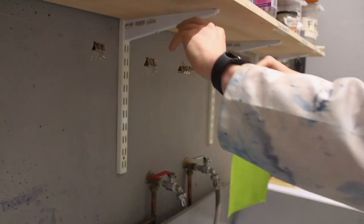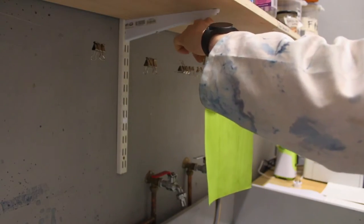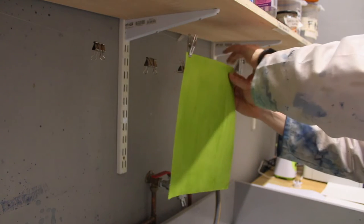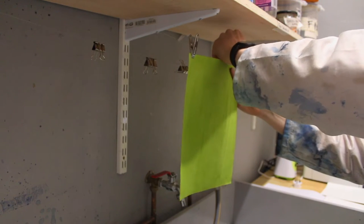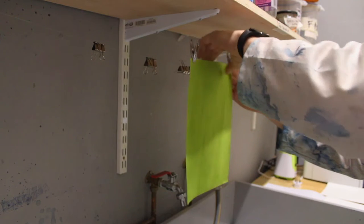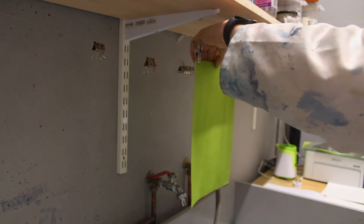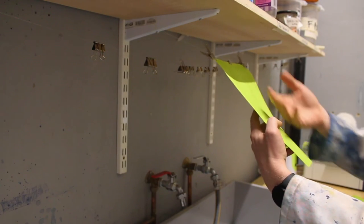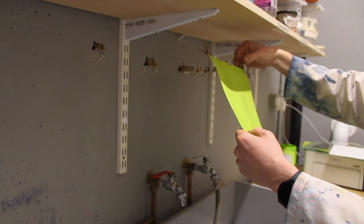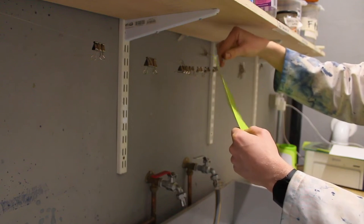Once you feel your paper has a nice even coat, you can then hang it up to dry, ideally in a dark space away from sunshine. After an hour or so, check and see if your paper is dry and then we can move on to the printing stage.